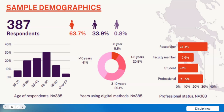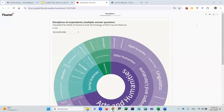We had 387 respondents, most of whom are aged 46 to 55. Two-thirds of respondents are women, and 41 percent have more than 10 years of experience with digital tools and methods. More than one-third are researchers. The profile of the majority of participants is a middle-aged female researcher with over 10 years of experience. Looking at disciplines, 36.8 percent of participants work or do research across various scientific fields.